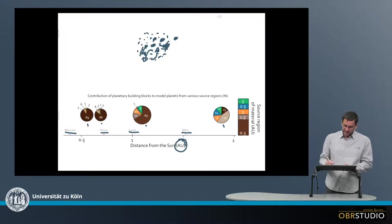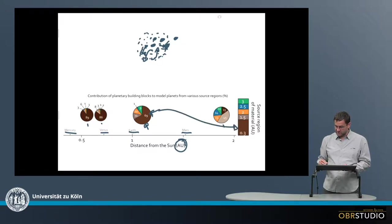And for each of the planets, for example, this one here, which is the third, which is about Earth-sized planet, about 70 percent, 69 percent, come from a distance between 0.3 and 1.5 astronomical units. So from more or less, this would be something from here to maybe here, this is the 70 percent.